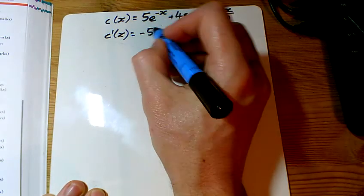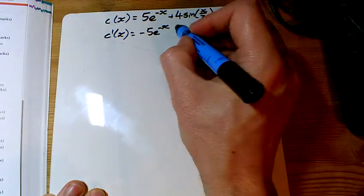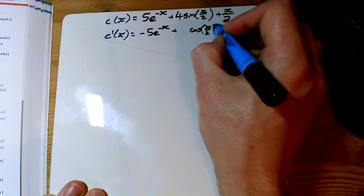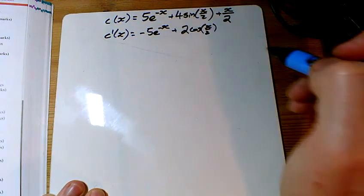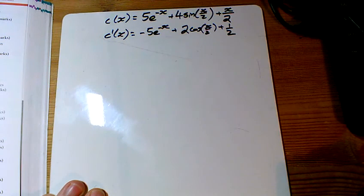So differentiating here, I'm just going to times by that minus, minus 5e to the minus x. Sine goes to cos, I need to times by this half as well, just plus that. And I've got a half there as well, x over 2 goes to a half.